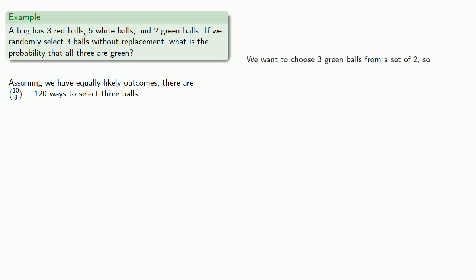We want to choose 3 green balls from a set of 2. Well, that's obviously 3 choose 2. We calculate that, and there's 3 ways of doing that. And so our probability is... wait a minute. How can I select 3 green balls if there's only 2 green balls in the bag?